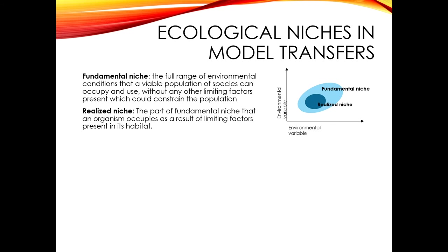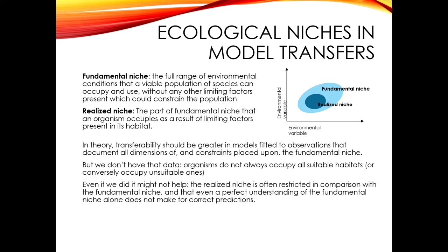What really matters for predictive performance is a model's ability to characterize the niche of the species you're interested in predicting. To remind you: the fundamental niche is the full range of environmental conditions that a species can occupy and use, while the realized niche is where it actually is as a result of other limiting factors. In theory, transferability should be greater in models fitted to observations that document all dimensions of the fundamental niche — everywhere your species can be. However, most datasets will fall short of meeting that, as organisms don't always occupy all suitable habitats, and conversely sometimes occupy unsuitable ones for periods of time.